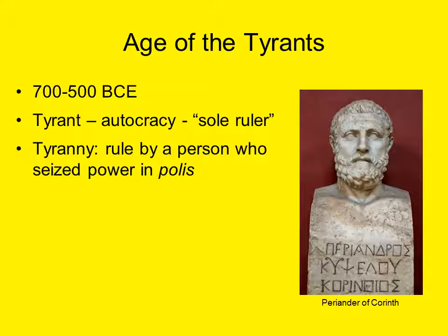We turn next to a period often called the Age of the Tyrants. Tyranny is rule by a person who seized power in the polis. Originally it did not have a negative connotation — Plato would be one of the first philosophers to exemplify these negative attitudes toward tyrants. We use the word today in a very negative manner, but it was not always the case. Tyrants in this era might be benevolent or cruel, but the position itself was not necessarily a negative thing. This tradition of tyrants did break the power that the aristocracy held on Greek cultural, social, and political life, but it was sometimes very oppressive.